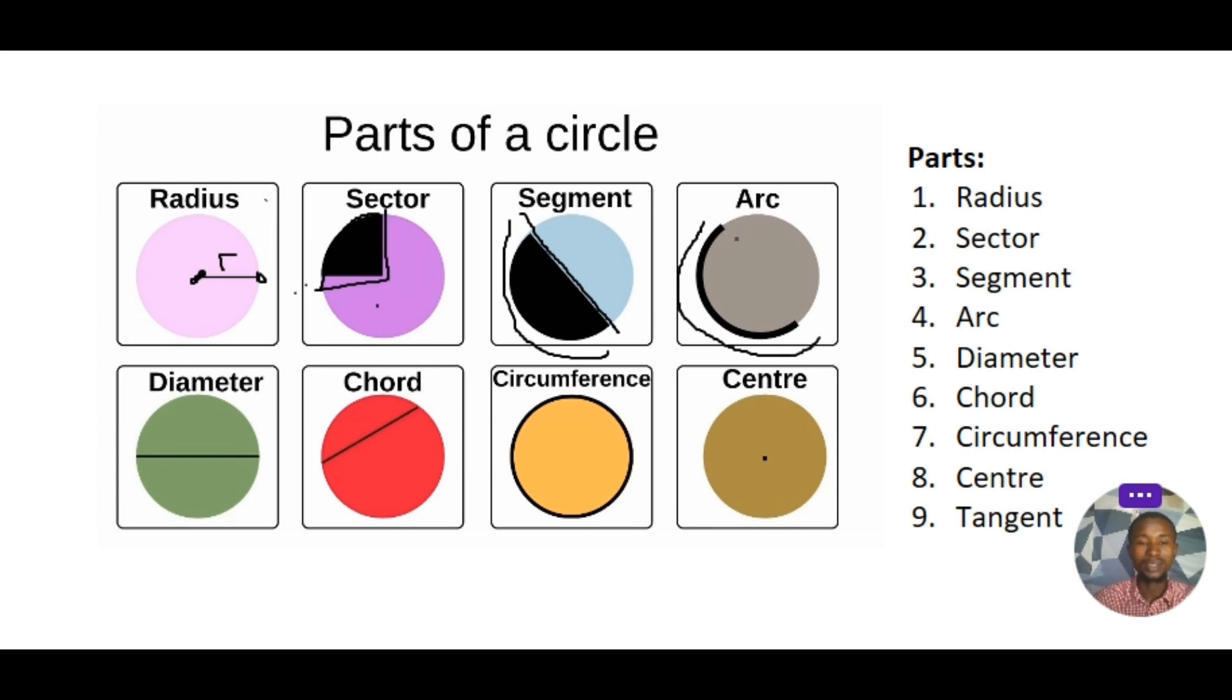So diameter. A diameter is a line from one point on the circumference to the other point on the circumference. A line that cuts a circle into two equal parts is what we refer to as a diameter.